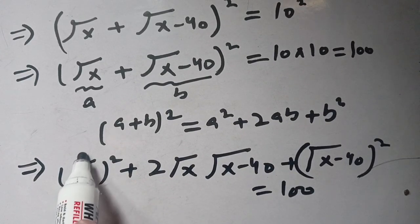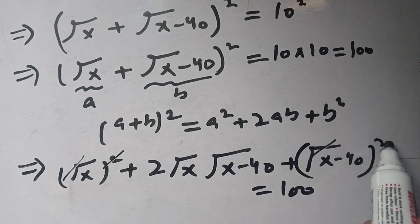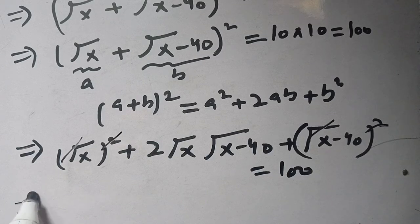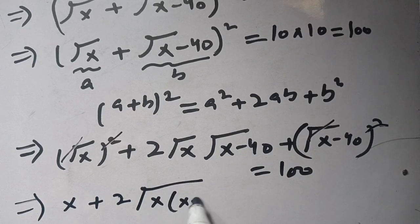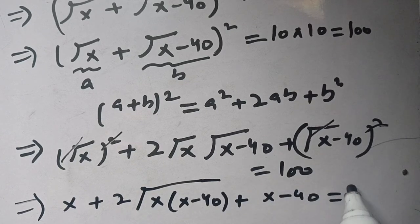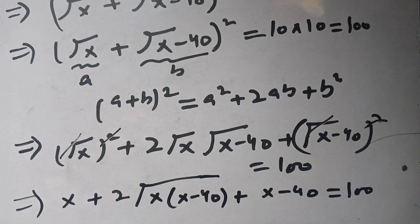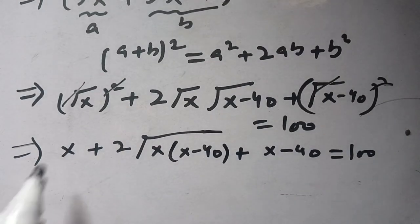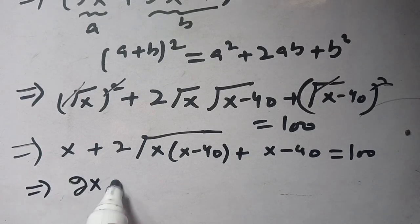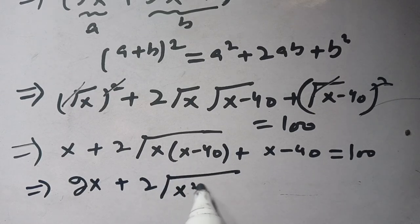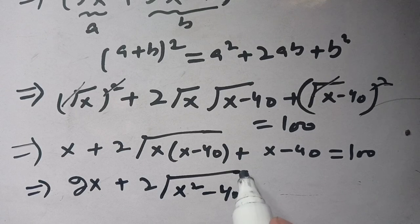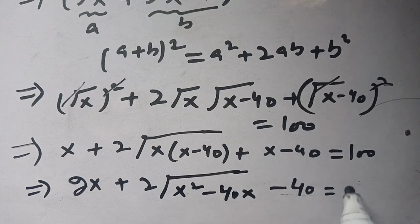We can cancel out this square with this square root, and this square with this square root. Our remaining equation is: x plus 2 times square root of x times (x minus 40) plus (x minus 40) it is equal to 100. We have x plus x, which becomes 2x, plus 2 times square root of x(x minus 40), minus 40, it is equal to 100.